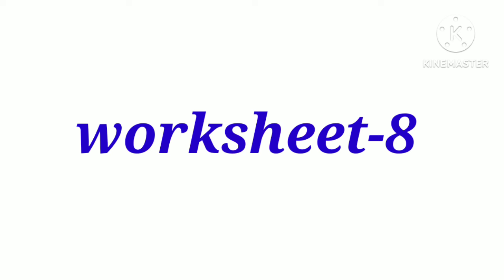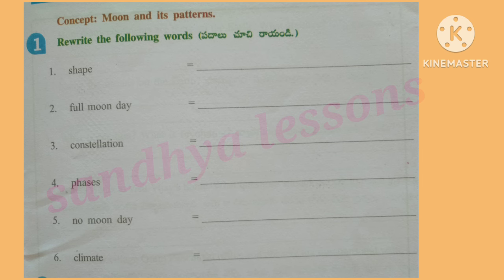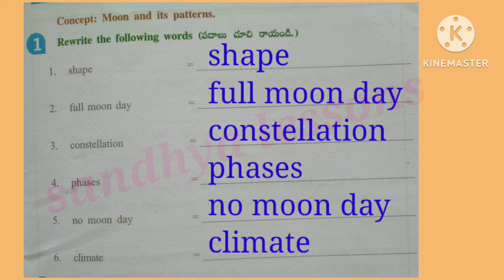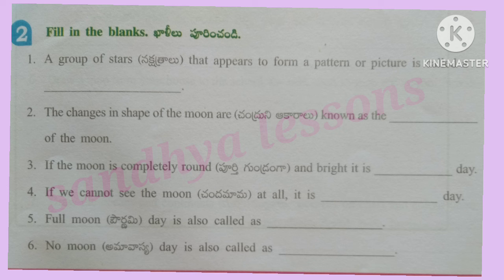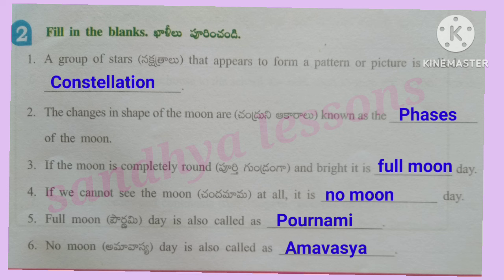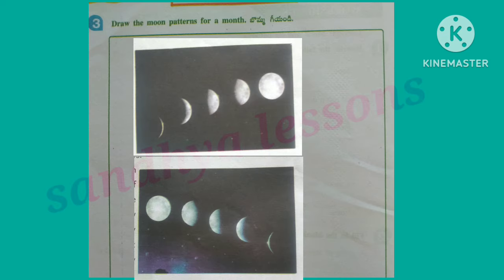Worksheet 8, Question 1: Rewrite the following words — Shape, Full moon day, Constellation, Phases, No moon day, Climate. Question 2 — Fill in the blanks: A group of stars that appears to form a pattern or picture is called a constellation. The changes in shape of the moon are known as the phases of the moon. If the moon is completely round and bright, it is full moon day. If we cannot see the moon at all, it is no moon day. Full moon day is also called Paurnami; no moon day is also called Amavasya. Question 3: Draw the moon patterns for a month.